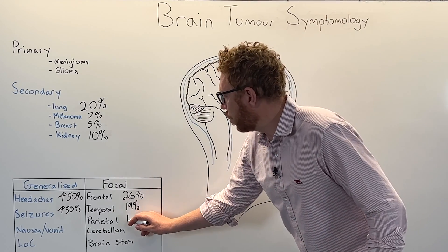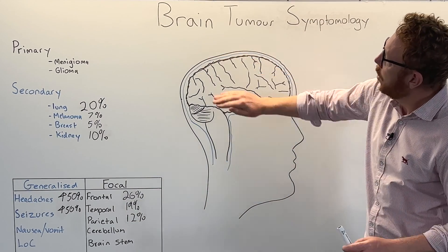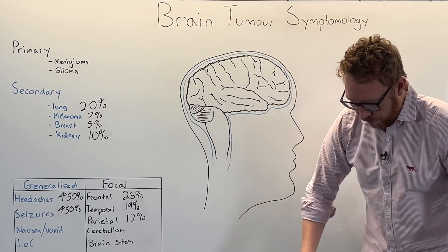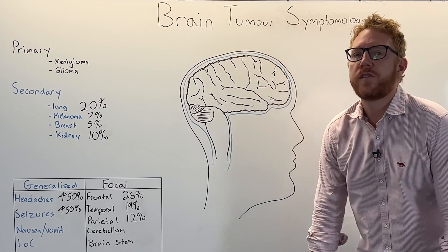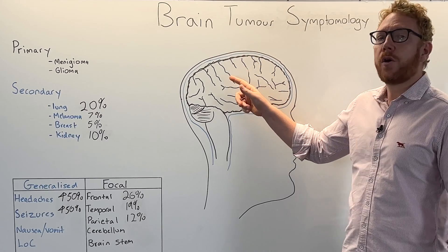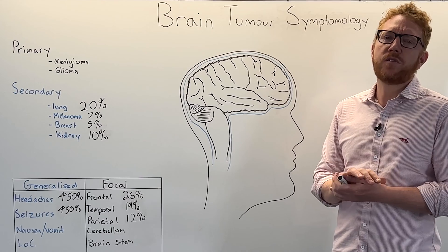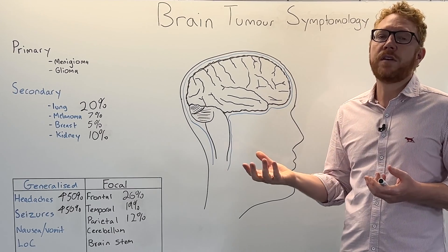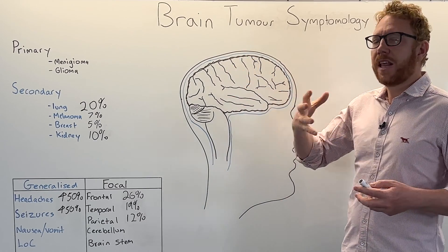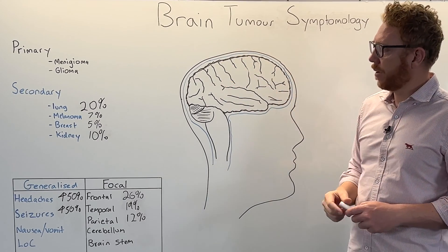About 12% of brain tumours impact the parietal lobe. The parietal lobe has a very important role in processing sensory information from the body, which we call somatosensory processing. Brain tumours causing focal changes here can alter responses to sensory information, producing symptoms like pins and needles or even numbness. It also has a role in language - including understanding written language like reading - and understanding faces can also be impacted.